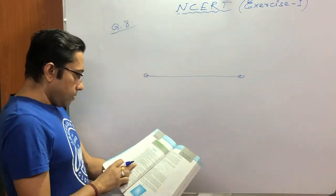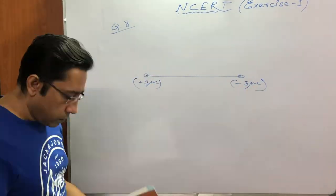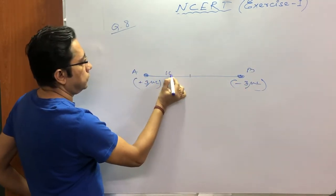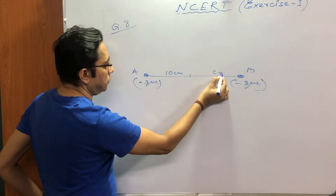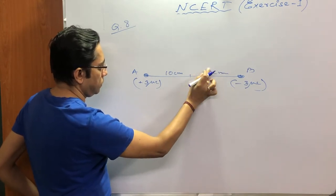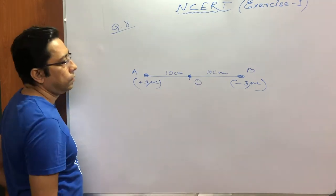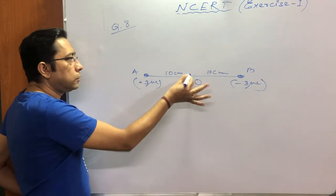It says A and B are 10 centimeter and 10 centimeter, 20 centimeter total, and this is midpoint O. We have to find the electric field at O.